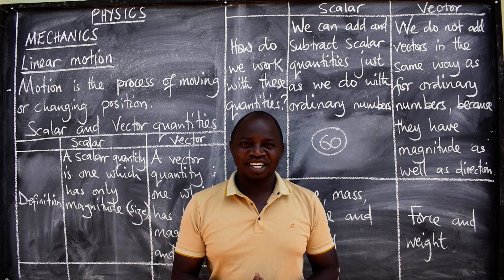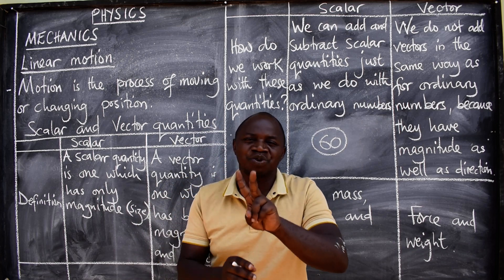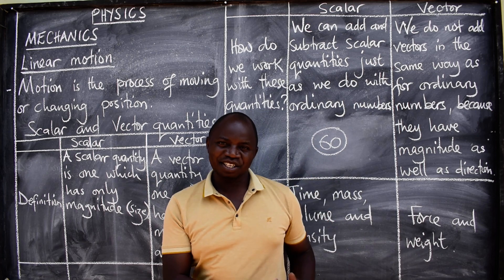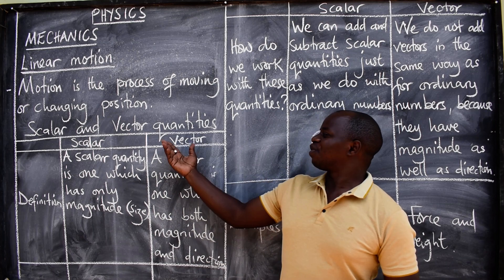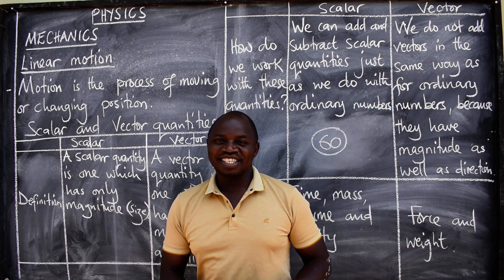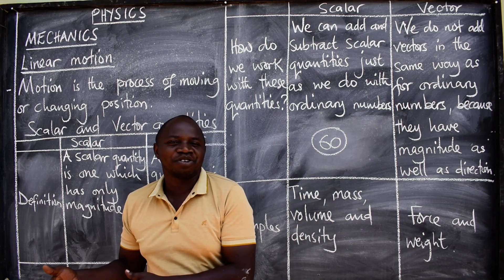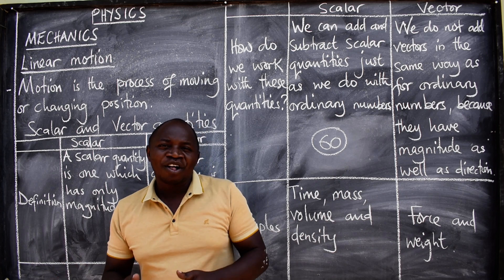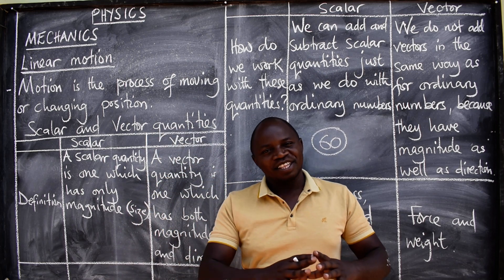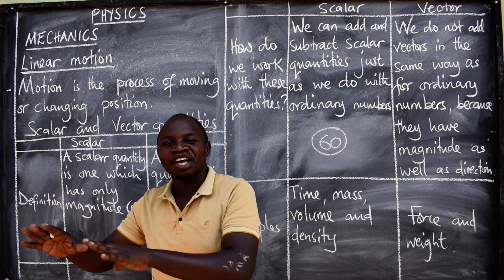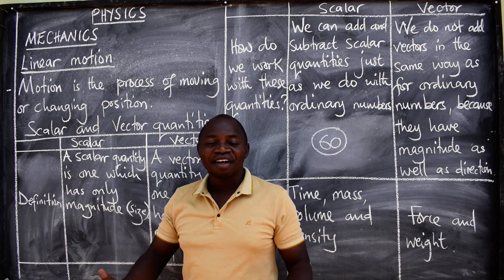These physical quantities have been divided into two groups. We have the first group, which is called scalar quantities, and the other one is called vector quantities. So when I say acceleration, when I say speed, you need to know where it falls — whether it is scalar or vector. A quantity can either be scalar or vector.